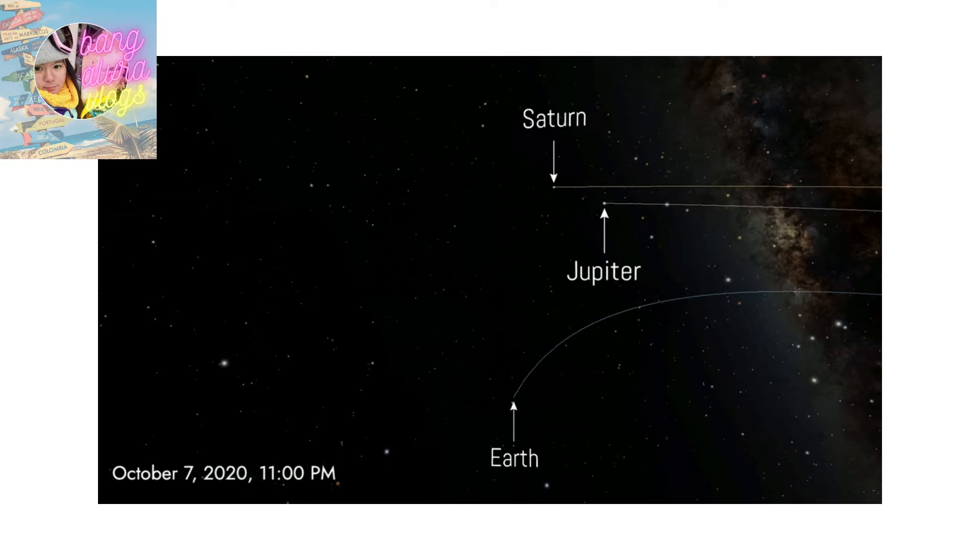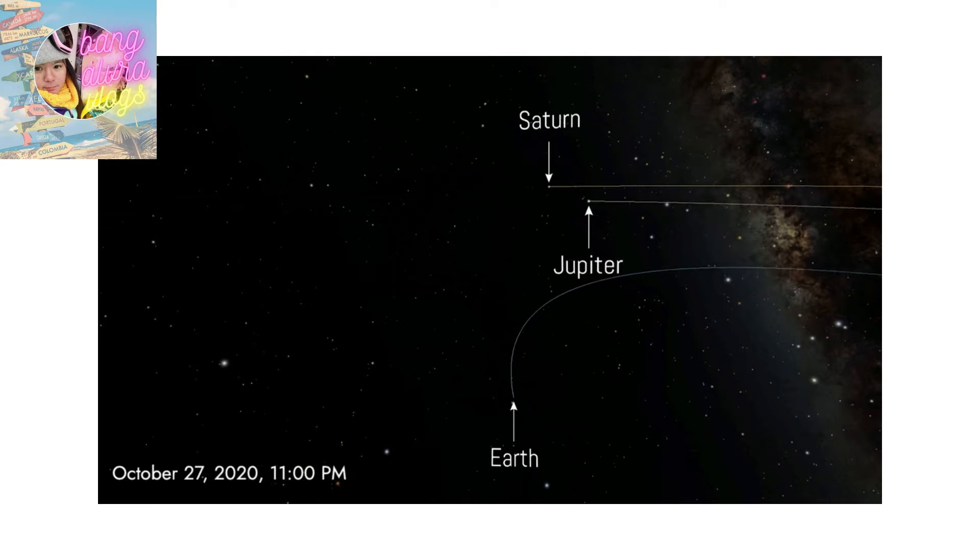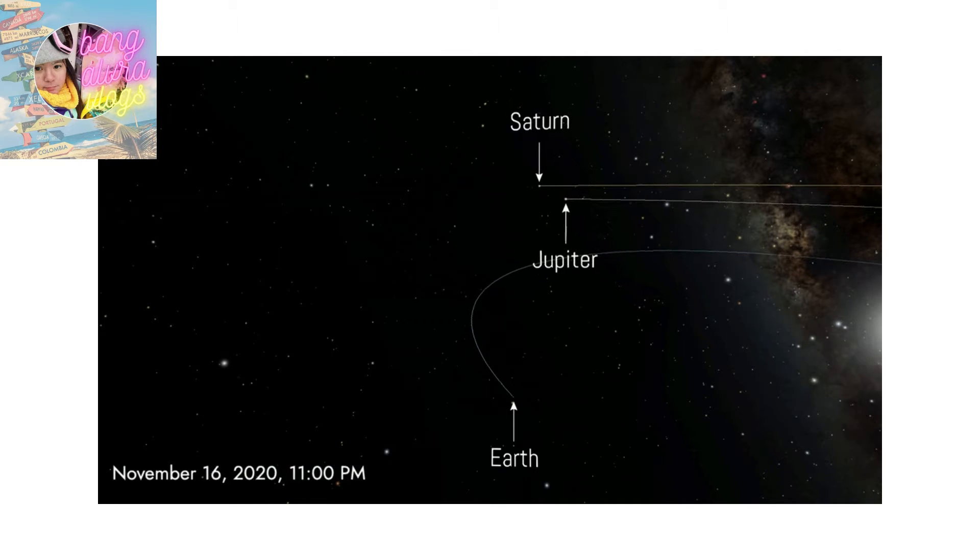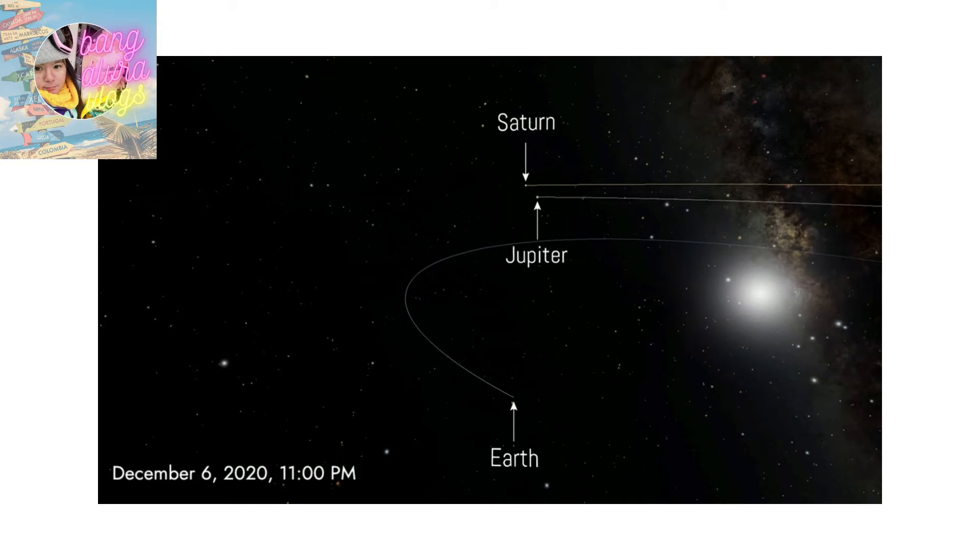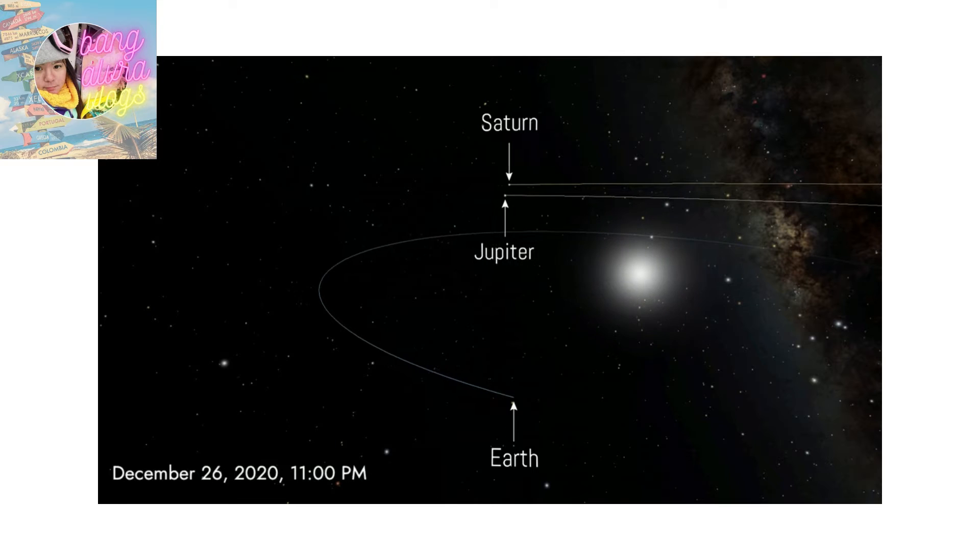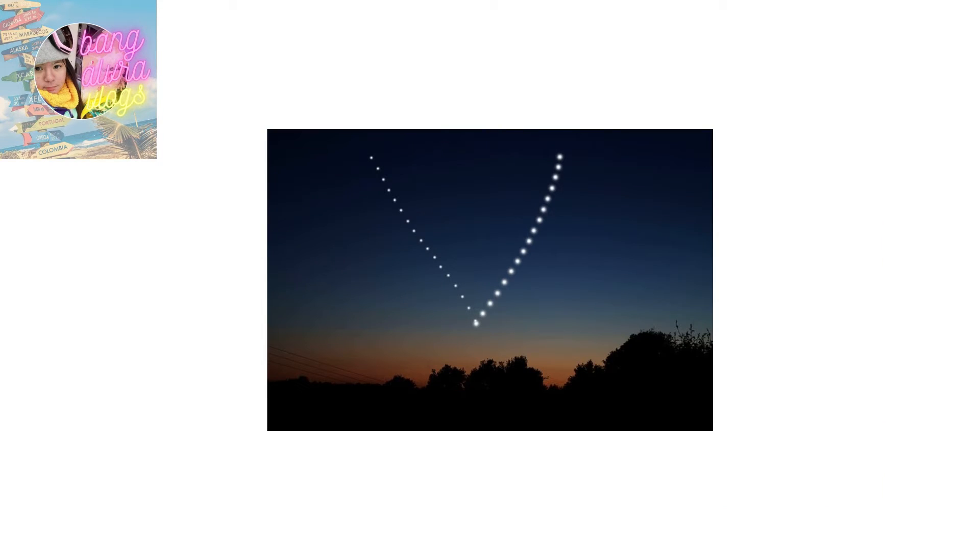What is the star of Bethlehem 2020? This year, bright planets Jupiter and Saturn will align perfectly on December 21st to create what is commonly called the Christmas star or the star of Bethlehem. According to NASA, Jupiter and Saturn align with one another every 20 years or so, but not nearly as close together as they will be in 2020.